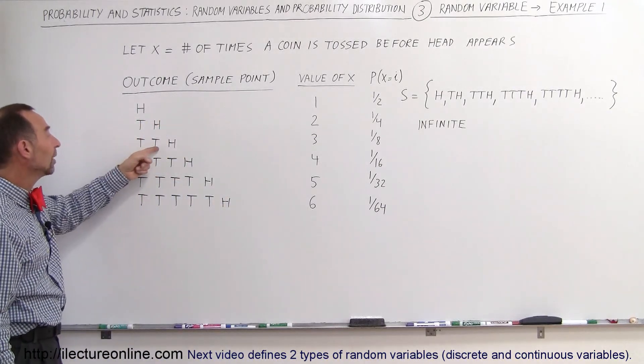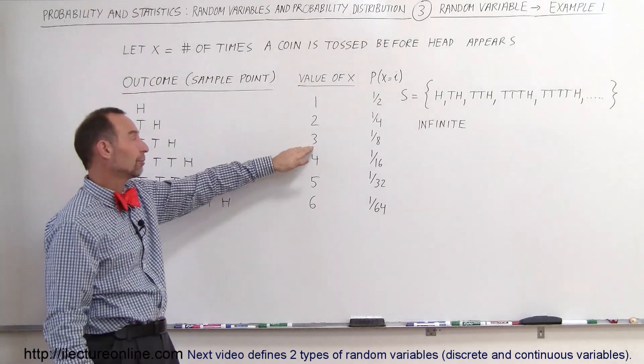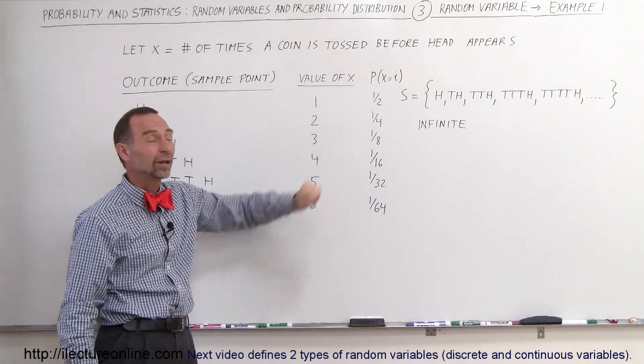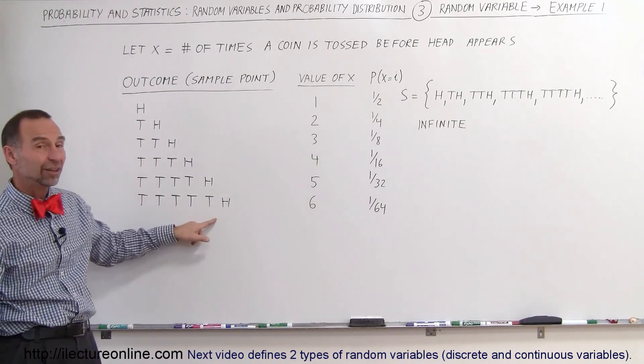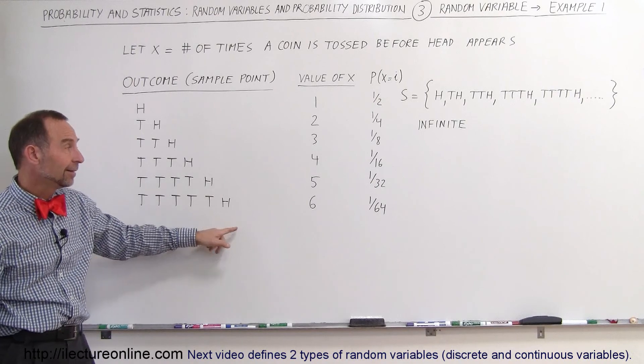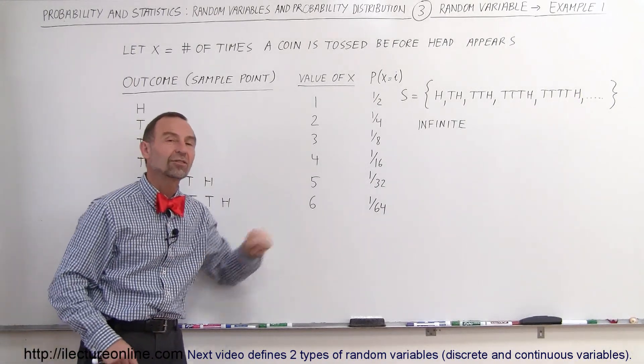Or we could have two tails first before we get a head, that means it requires three tosses, and X will therefore be three, the probability of that happening is one-eighth, and so forth. You can see that we get to this point where you toss five tails before you toss a head, six tries, six tosses, X equals six, one out of sixty-four.